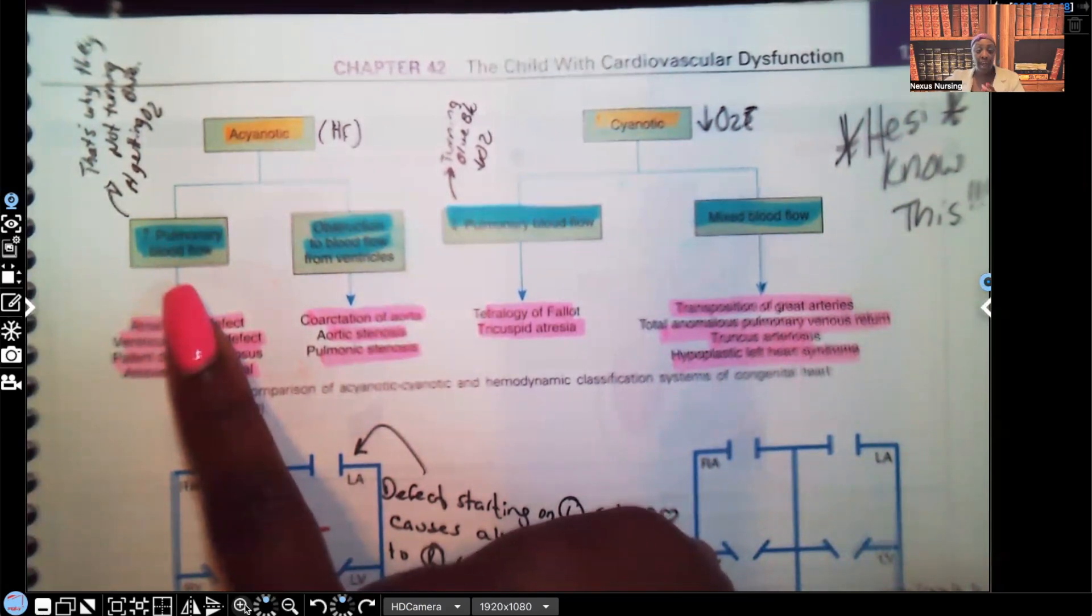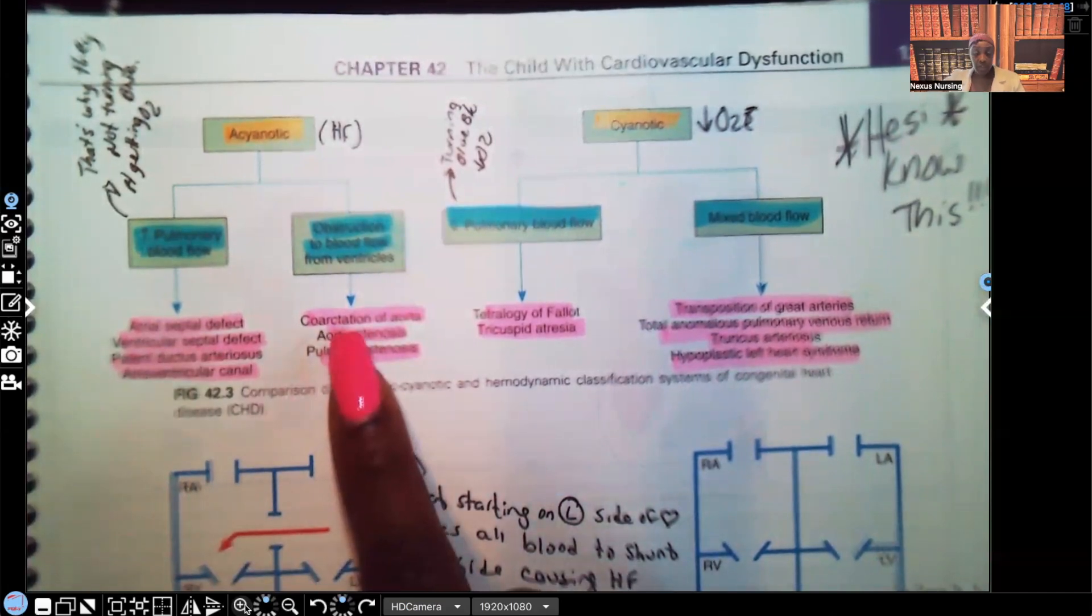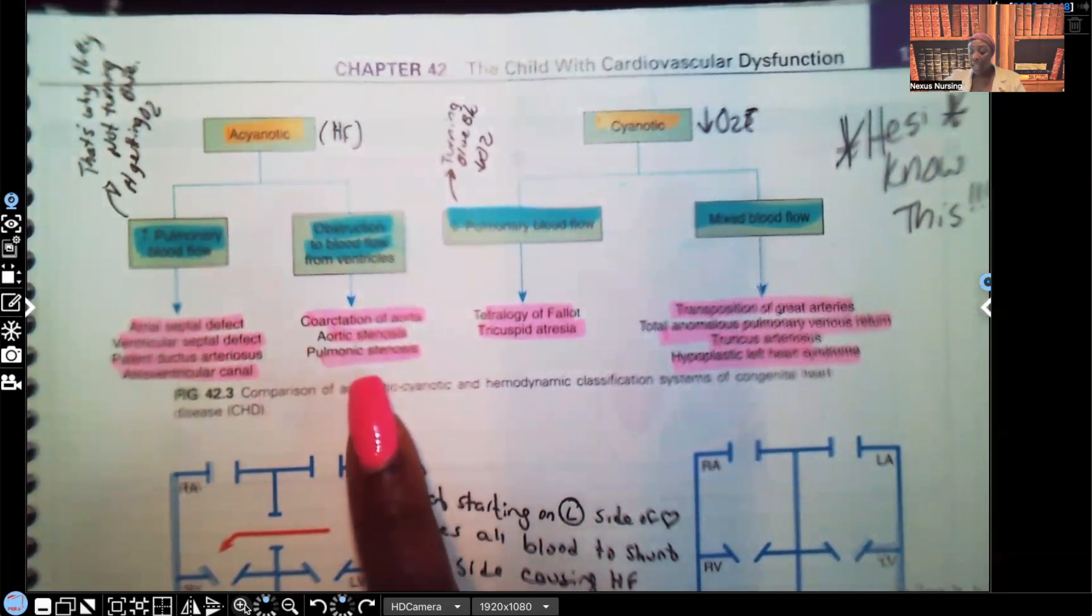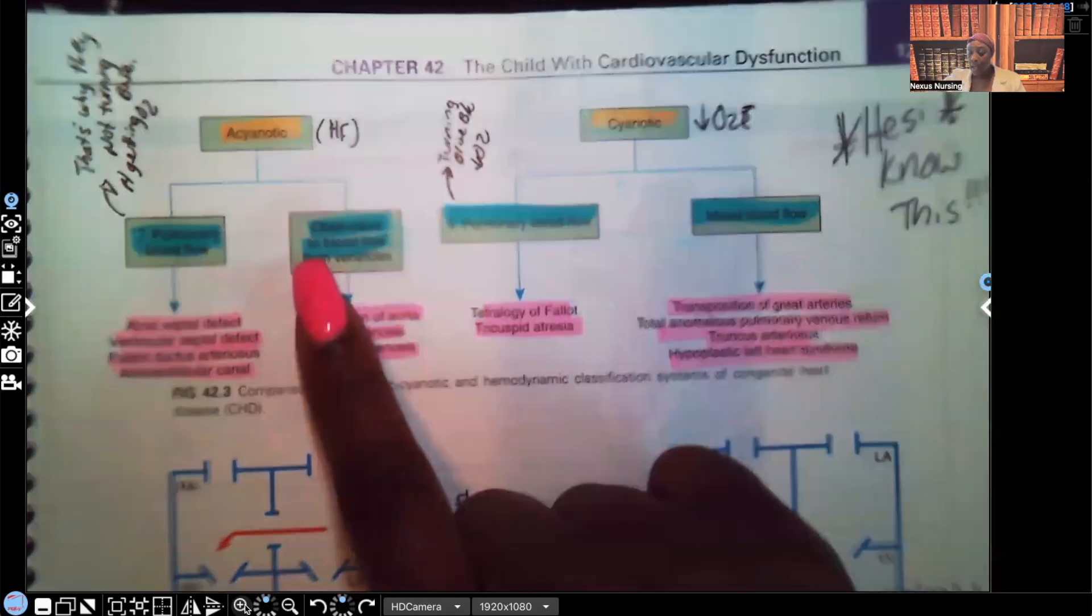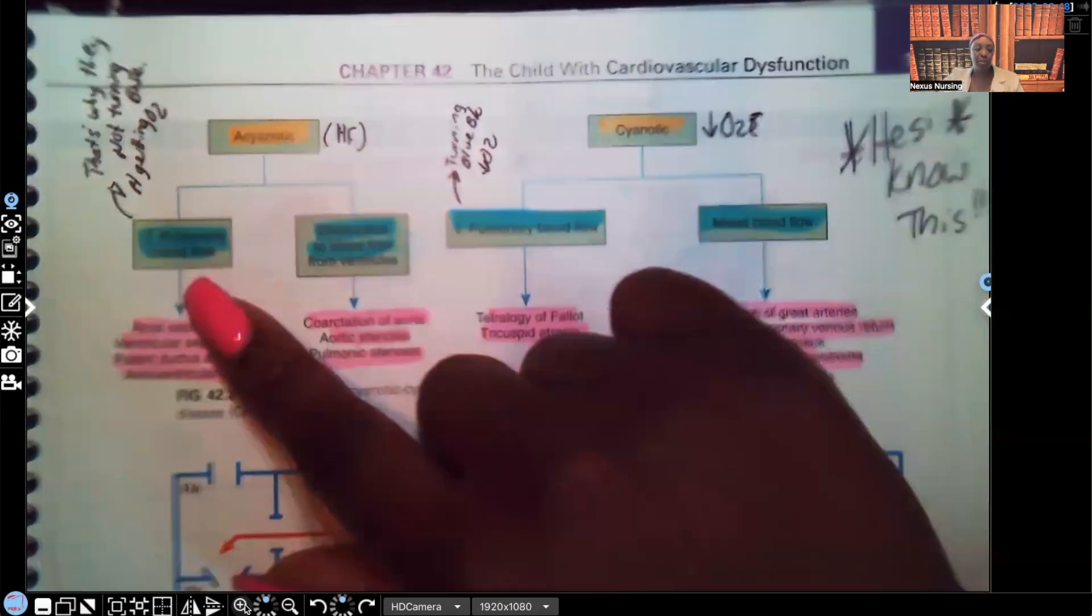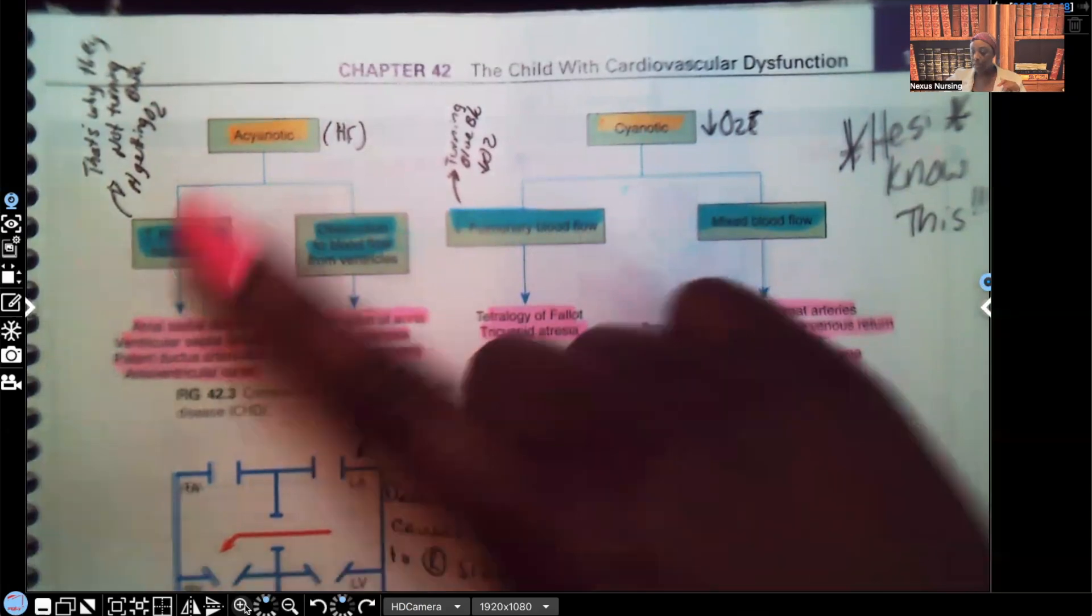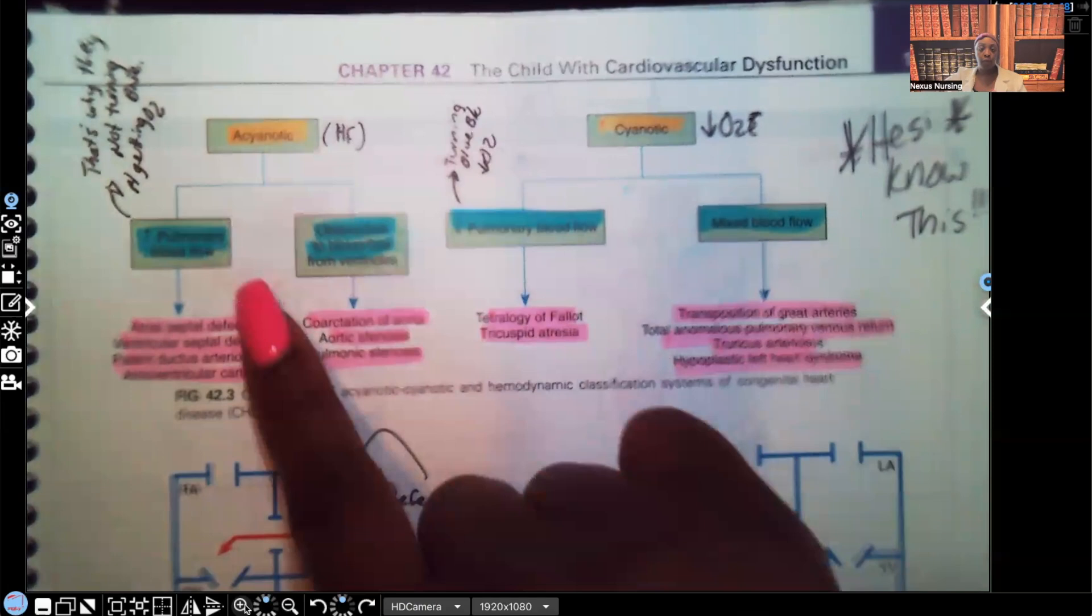These acyanotic disorders, I put an HF here to remind you that these patients are going to be displaying those signs and symptoms of heart failure. They're at risk for heart failure. What are the disorders that fall under acyanotic? Atrial septal defect, ventricular septal defect, patent ductus arteriosus, and atrioventricular canal. The reason that they fall under acyanotic is increased pulmonary blood flow. That increased pulmonary blood flow gives them the signs and symptoms of heart failure. That's why they're not turning blue. The patient's still getting oxygen.